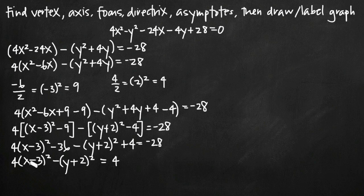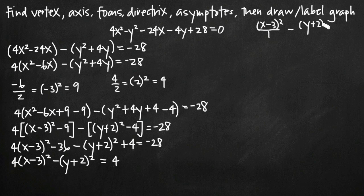Now in order to remove the coefficients from the squared x and y terms, we divide through by 4. What we get is x minus 3 squared over 1 minus y plus 2 squared over 4 equals 1. Now we have an equation in standard form and we can compare it to the table of hyperbola equations.